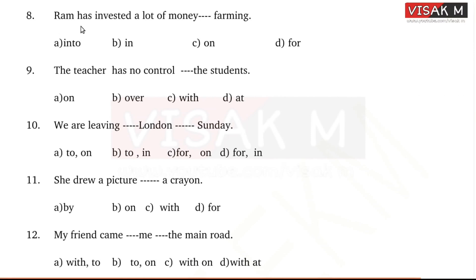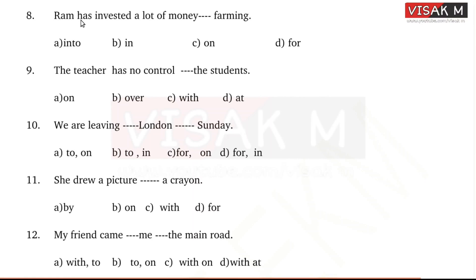Ram has invested a lot of money dash farming. Options: A - into, B - in, C - own, D - for. Ram has invested a lot of money in farming. The answer is 'in.'